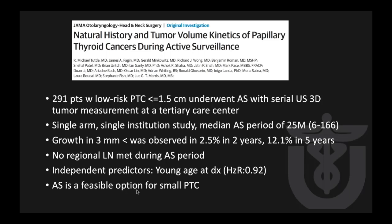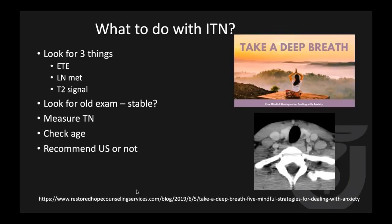So you don't need to jump into FNA or surgery unless there are symptoms. When I find an incidental thyroid nodule, I take a deep breath and look for three things: any extrathyroidal extension, lymph node metastasis, and if I have MRI, T2 signal — or ADC if diffusion is available. I search for old exams to confirm stability, measure the nodule, check the patient's age, and decide whether to recommend ultrasound.